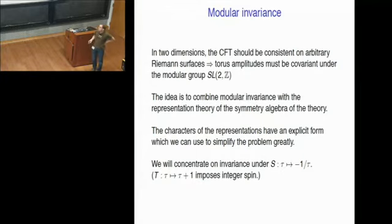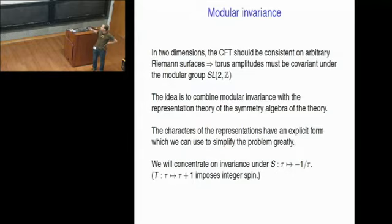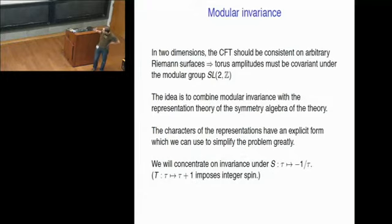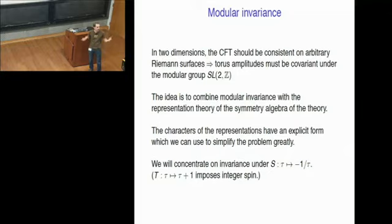Modular invariance — Miranda already explained where it comes from just before lunch. Essentially what we're looking at is the partition function, which is the torus amplitude. The vacuum partition function will be invariant under the modular group SL(2,Z). The idea is to combine two pieces of information: we have this modular invariance on the one hand, and on the other hand we know the representation theory of the symmetry, and we combine those two things to try to extract something.